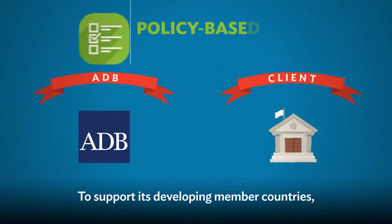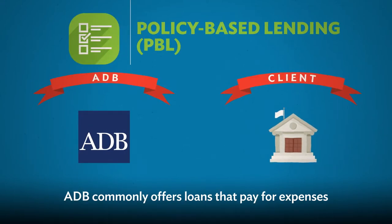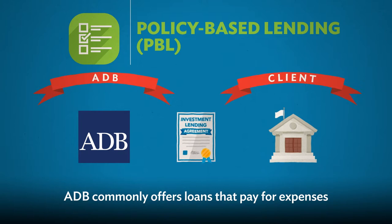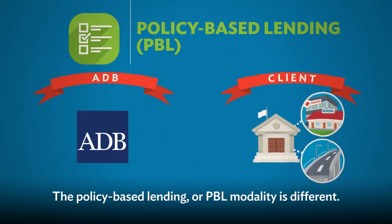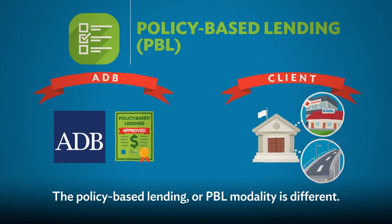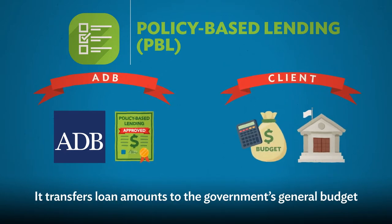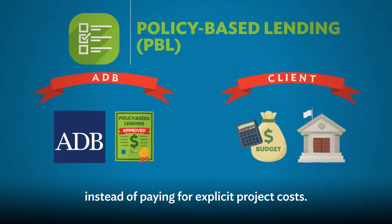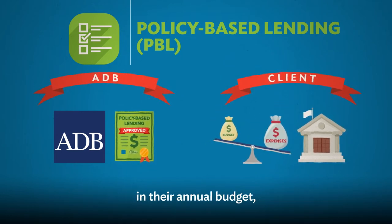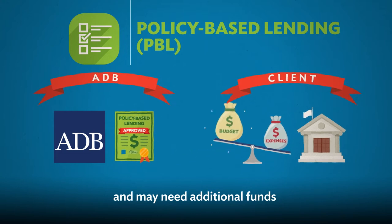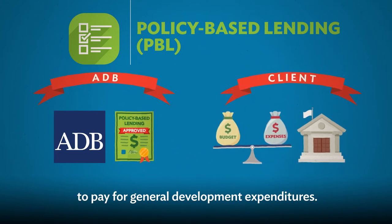To support its developing member countries, ADB commonly offers loans that pay for expenses to complete specific investment projects. The policy-based lending, or PBL, modality is different. It transfers loan amounts to the government's general budget instead of paying for explicit project costs. This helps countries that may be facing a financing gap in their annual budget and may need additional funds to pay for general development expenditures.